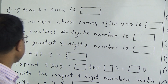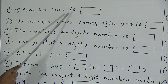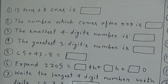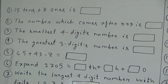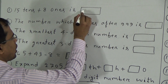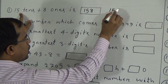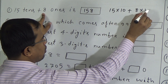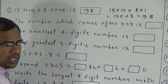We will take total 3 parts. First question: 15 tens plus 8 ones is equal to what? 15 tens means 15 multiplication 10, which is equal to 150. 150 plus 8 ones — 8 ones means 8 multiplication 1, which is equal to 8. So 150 plus 8 is equal to 158. Answer will be 158.